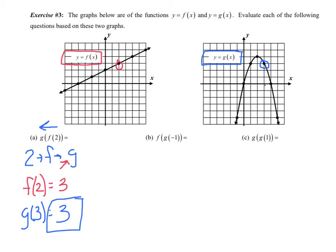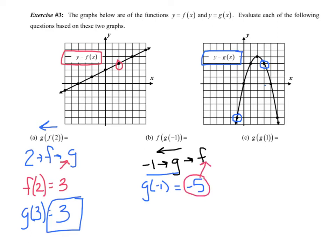Let's try F of G of negative 1. Working backwards: negative 1 goes into G first. On the G graph (blue), at x equals negative 1, the height looks like negative 5. Now F of negative 5 — going to the F graph at x equals negative 5, the height looks like negative 1 and a half.